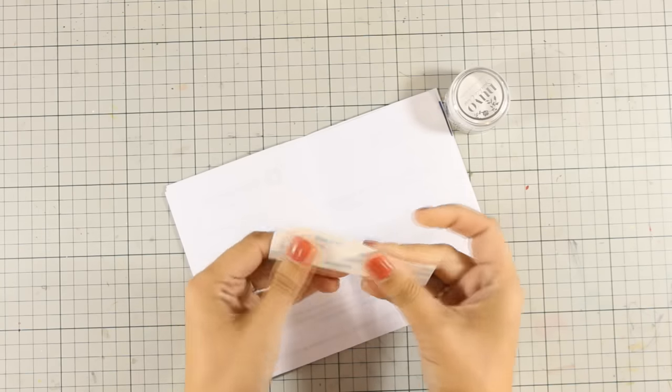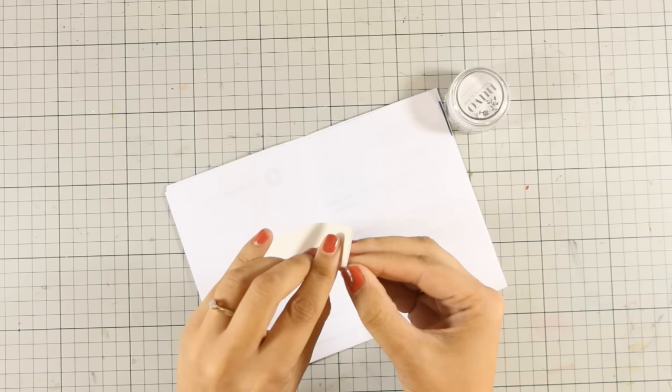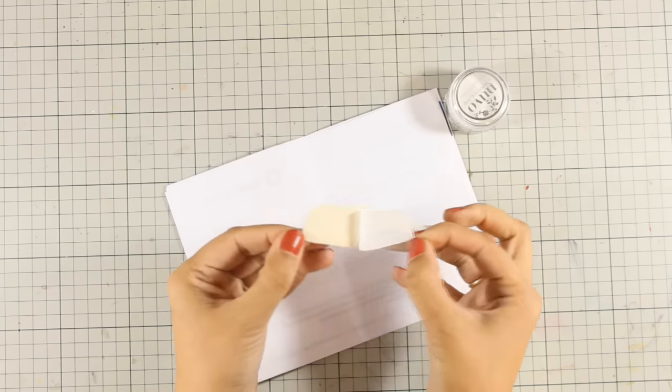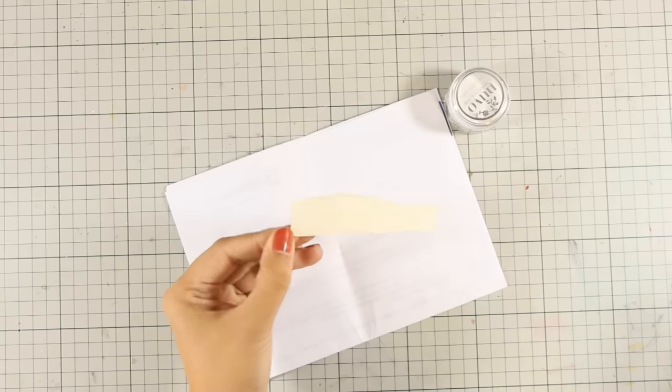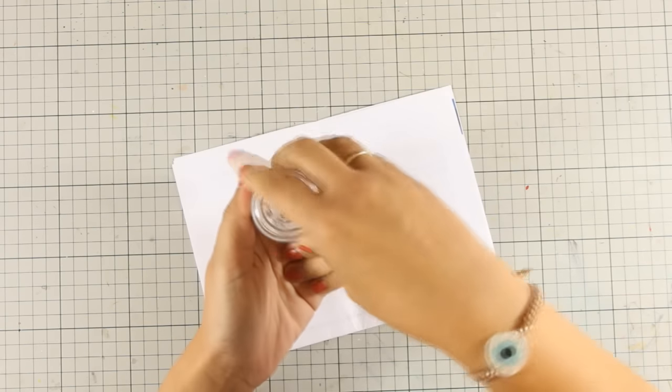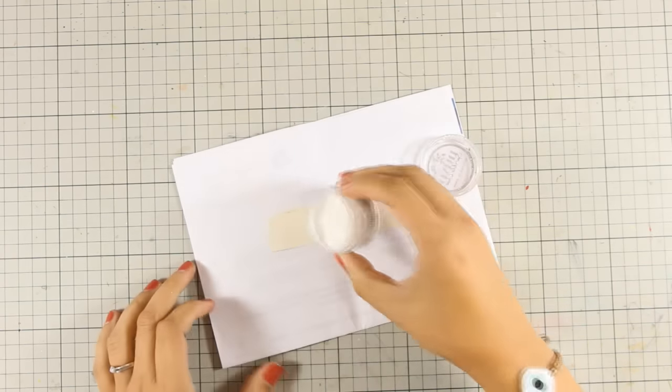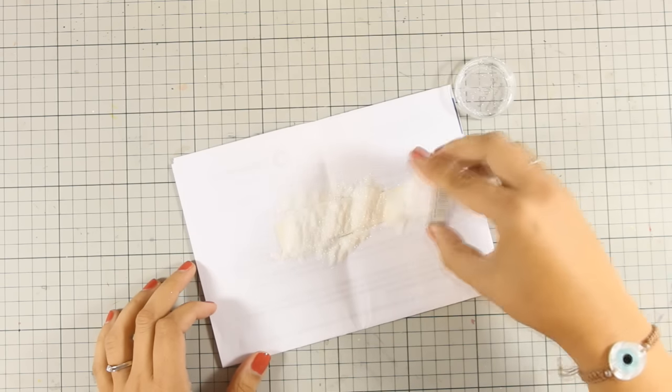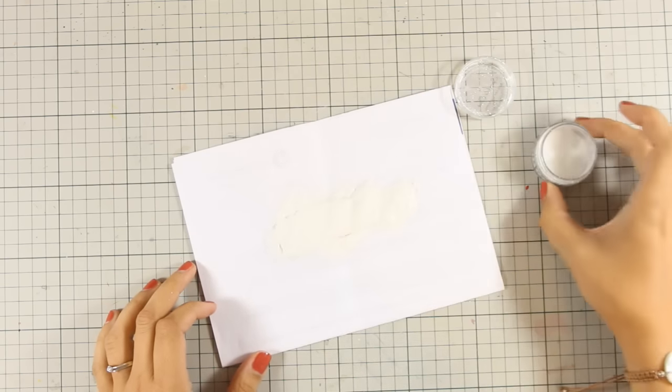I am peeling off the backing so that the adhesive is now exposed and I'm going to apply my glitter on top. This is fine glitter and it's going to cover up all the adhesive nicely. I'm applying a generous amount and I'm just going to put the excess back in the jar.